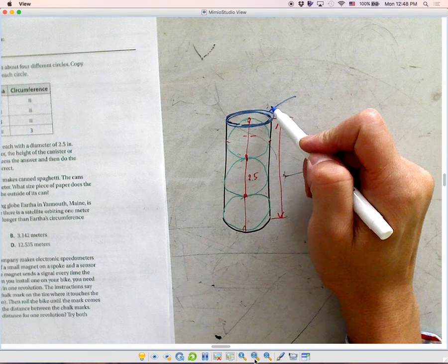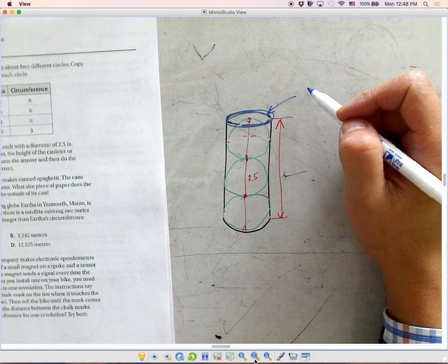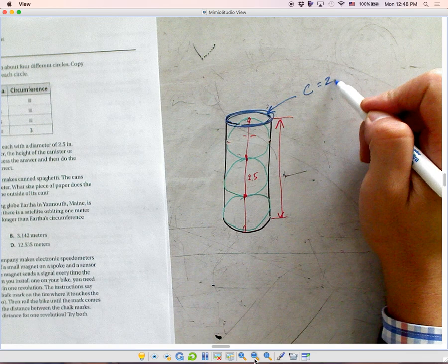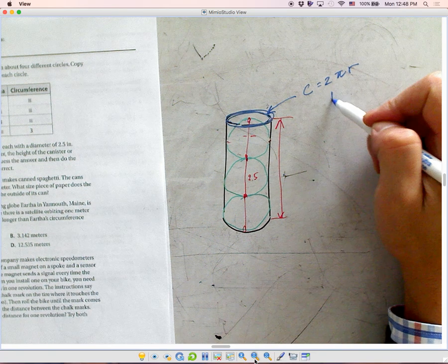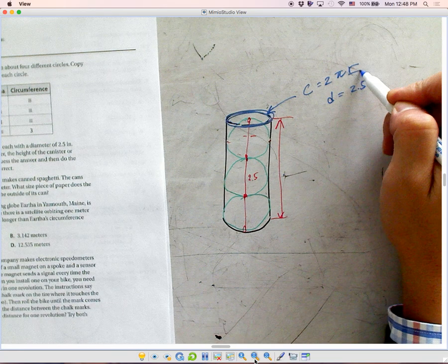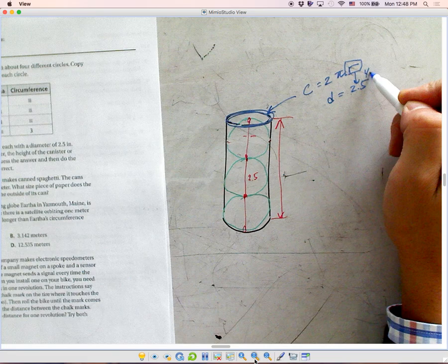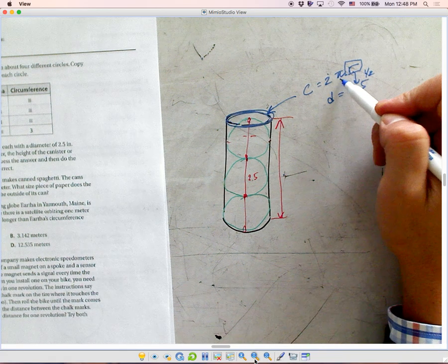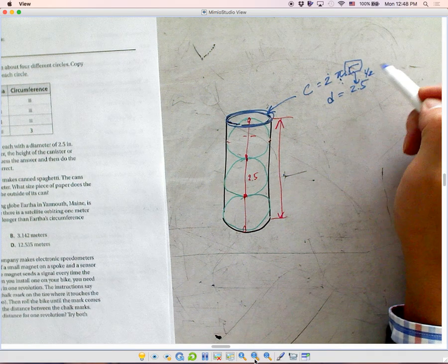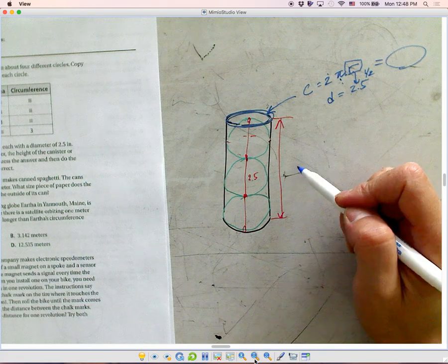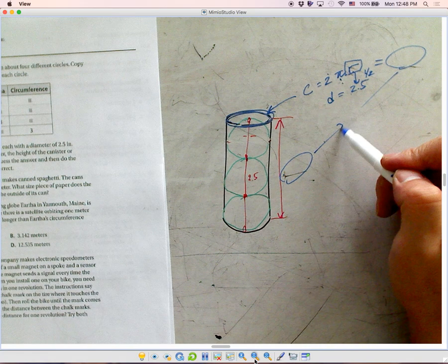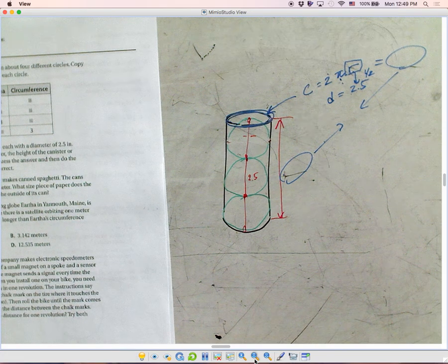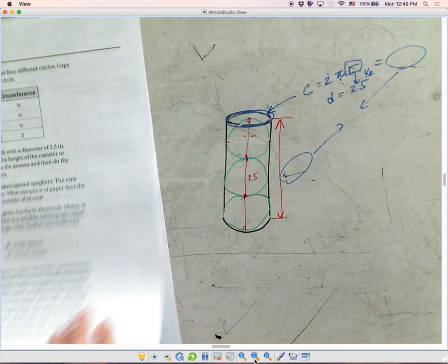In order to find the canister, the circumference of this circle, we have to do circumference equals 2 times pi times radius, where diameter is 2.5. So the radius is half of 2.5. So get that number, multiply by 2 and multiply by 3.14. That number, whatever the number, you compare it to the height of this canister and you tell which one's greater.